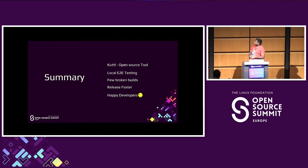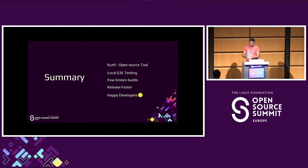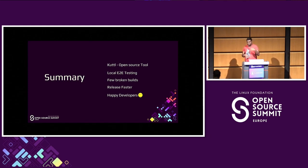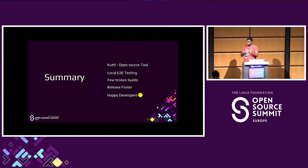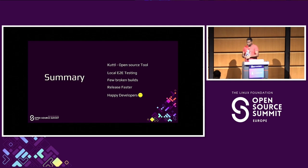Summary: Cuttle is an open source, CNCF-approved tool used for local end-to-end testing. Using this tool, we've rarely seen the build broken at the master or main branch level. We were able to release faster. We moved from chart testing to Cuttle and it's now integrated across JFrog — educating teams to integrate with their existing Python tests or anything, specifically for testing on Kubernetes. Result: happy developers and, more importantly, happy customers when you release with fewer bugs.